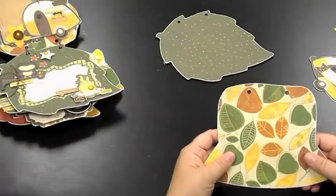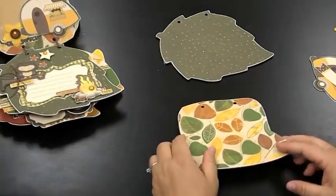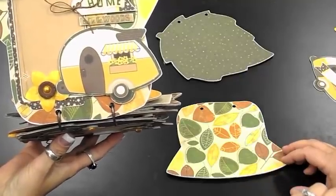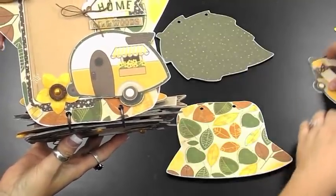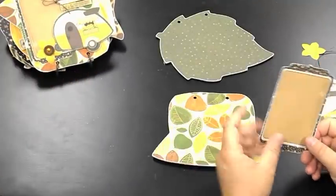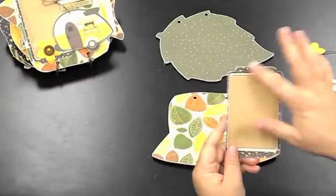Alright, moving on to page eight. This is the back of the cute fishing hat and Chris will show you a close up of the page. This one came out of the Noteworthy set. Sanded the edges.